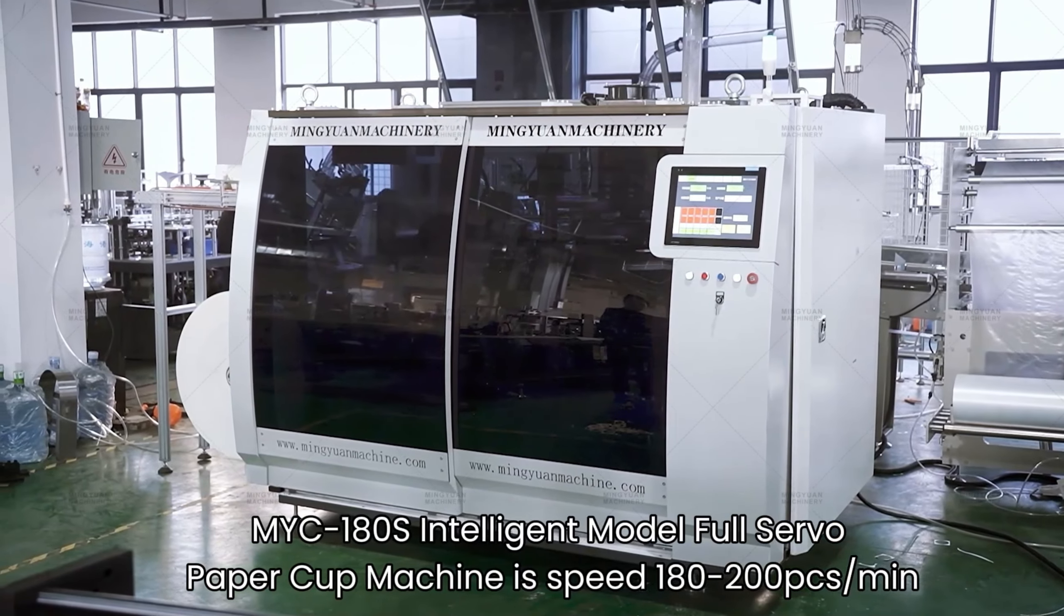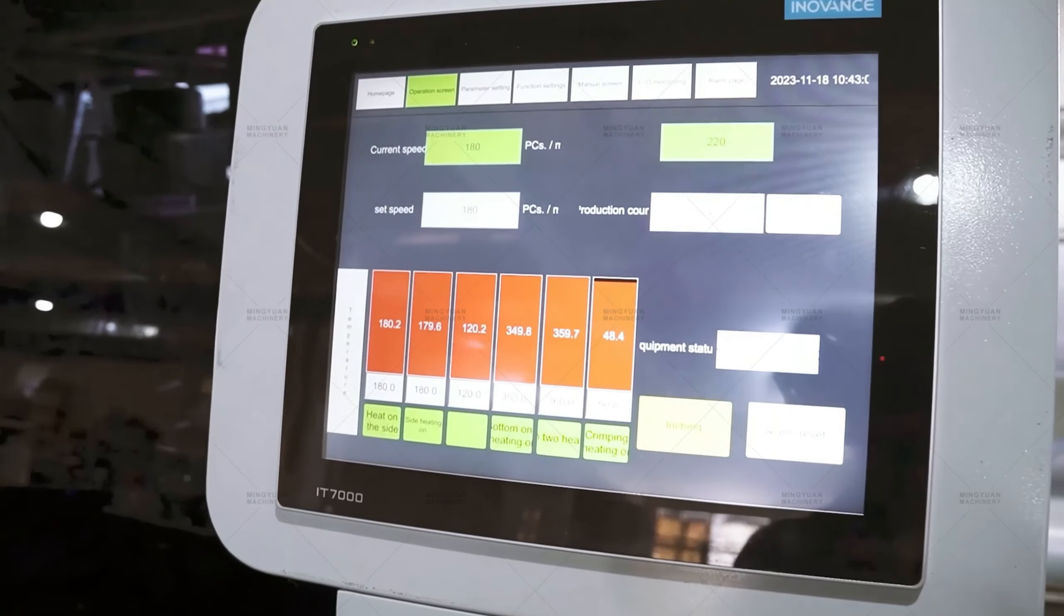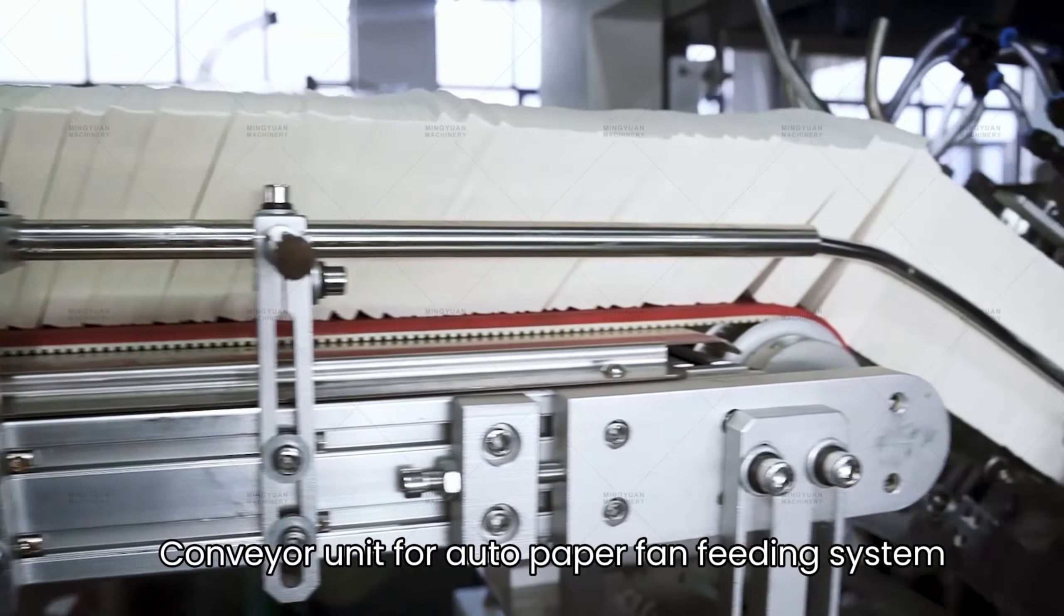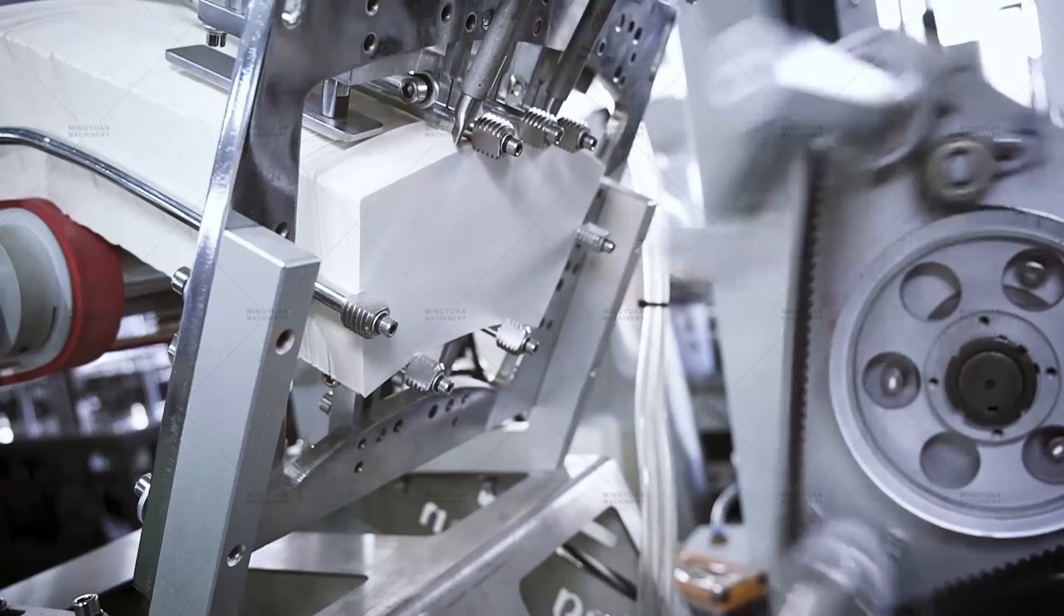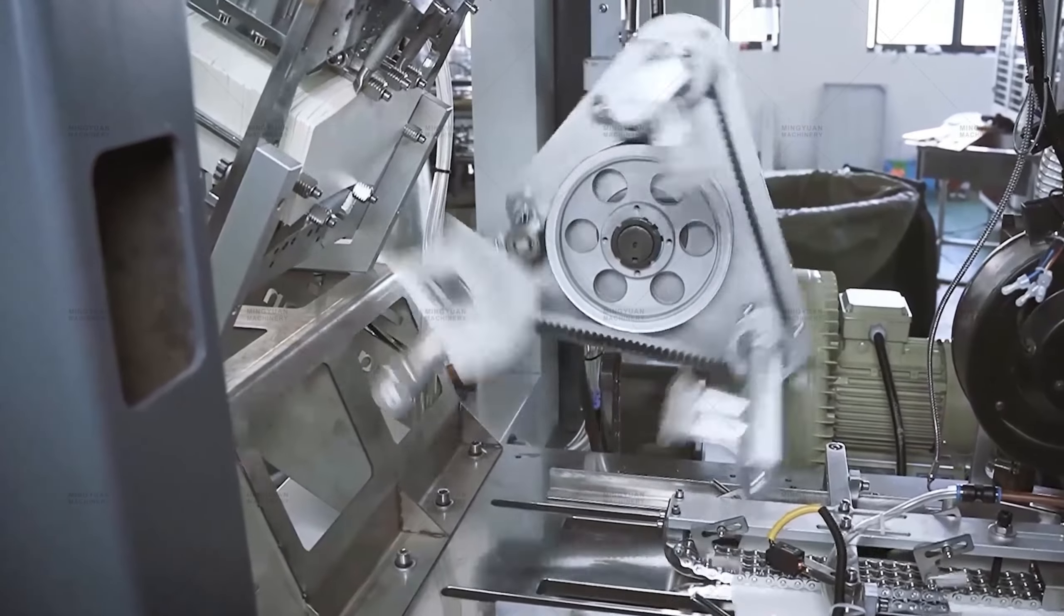The MYC-180S Intelligent Model Full Servo Paper Cup Machine operates at speeds of 160-180 pieces per minute. It features a conveyor unit for auto paper fan feeding system. The rotating suck paper system ensures the paper fan feeding won't easily get stuck.